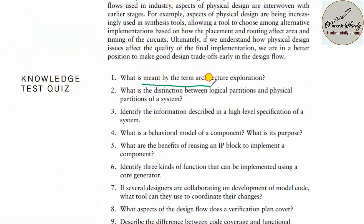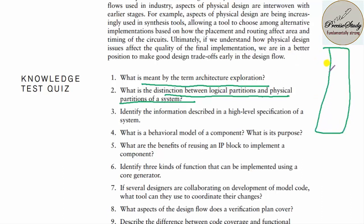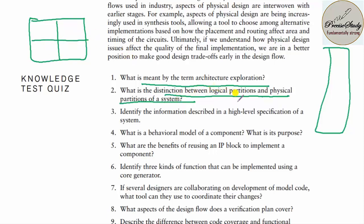What is meant by architectural exploration? What is the distinction between logical partition and physical partition? Logical partition means — for example, in microprocessor 8086, it consists of 1 MB of memory divided into four segments: data segment, code segment, stack segment, and extra segment. All segments are divided virtually — that is logical partitioning. But in the case of a house, you make several physical rooms. That is physical partition.